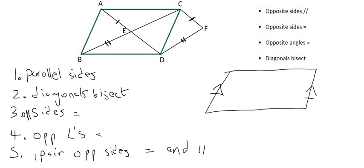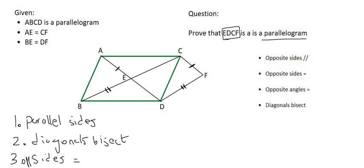If you can find any one of those five categories, then it is a parallelogram. So let's go see what we have. Well, we know that the green ABCD is a parallelogram, and so automatically we can use these over here.